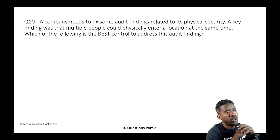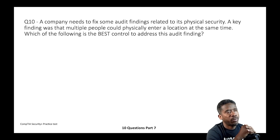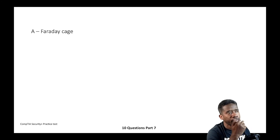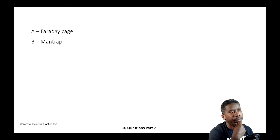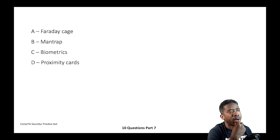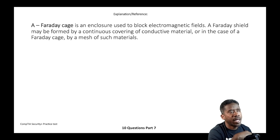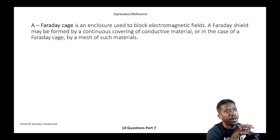Question ten: A company needs to fix audit findings related to physical security. A key finding was that multiple people could physically enter a location at the same time. Which of the following is the best control to address this? A) Faraday cage, B) Mantrap, C) Biometrics, or D) Proximity cards.